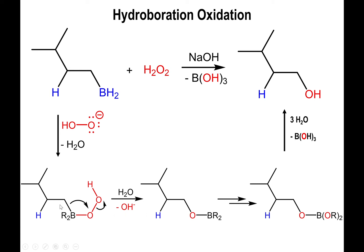Because the process happens with retention of configuration, the alcohol you end up with is also in the syn configuration with respect to the hydrogen that came from the borane molecule. So not only are we adding the OH in a syn fashion, but we also add it in an anti-Markovnikov fashion. Both of those things need to be kept in mind. If you want the anti-Markovnikov product, you're stuck with the syn configuration. If you want the Markovnikov product, then you use mercury, but then you're stuck with the anti-configuration.